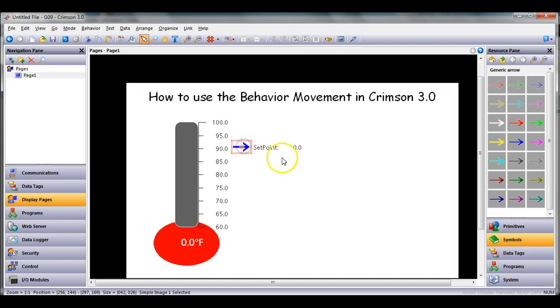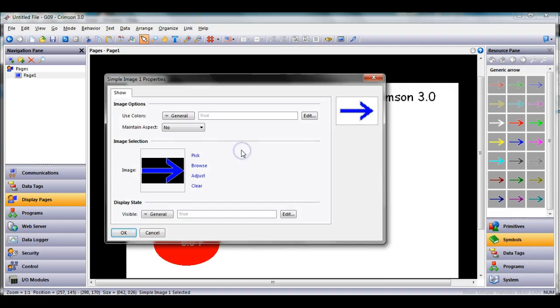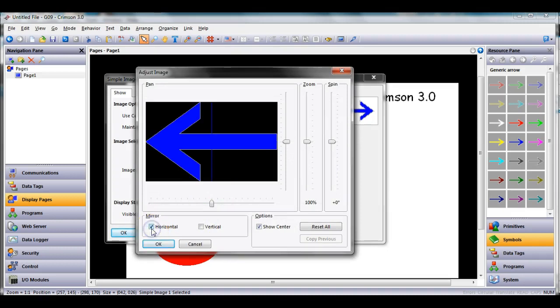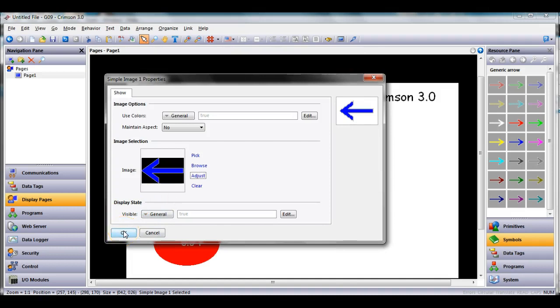Then I want to reverse the position of it. I'm going to double click on this to bring up its properties, go to the adjust field, click the horizontal mirror which will flip it over for me, click OK.